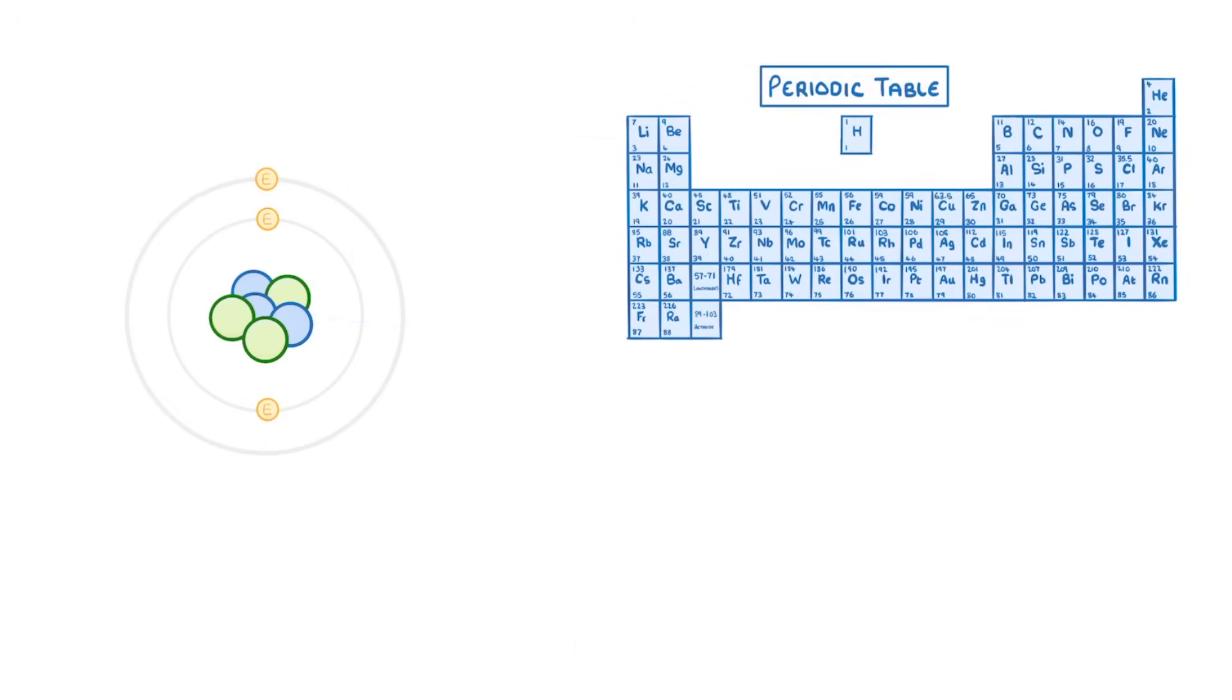If you look at a periodic table, each box is known as a nucleus symbol, and represents a particular element, like this one for lithium.